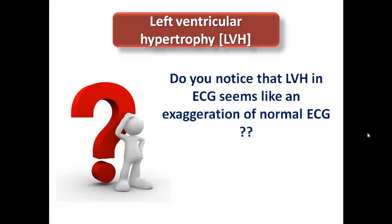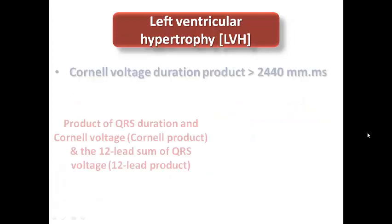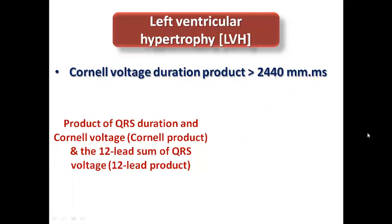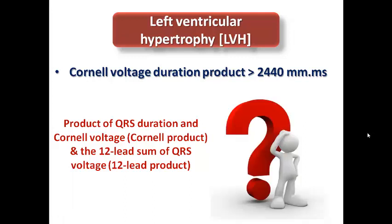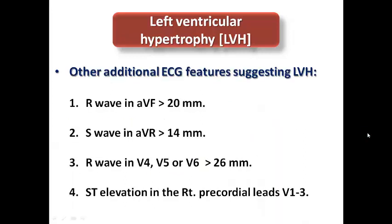LVH in ECG seems like an exaggeration of the normal ECG because the left ventricular wall thickness is normally much greater than RV wall thickness, and left ventricular depolarization already predominates. So if the left ventricle is even thicker, you are simply exaggerating the normal pattern. The Cornell voltage-duration product combines QRS duration with the Cornell voltage, but it is complicated to calculate and is not recommended for routine use on the surface ECG.